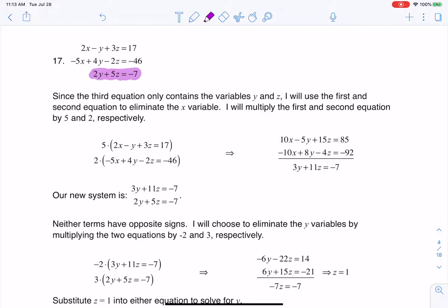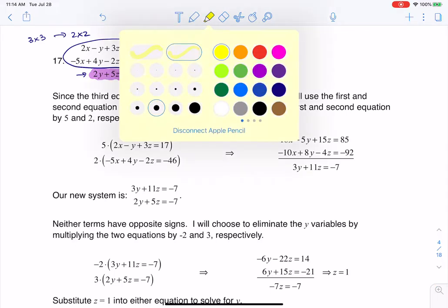In any 3x3, you start with your 3x3 and want to simplify it to a 2x2. I already have one equation with two variables, so I'm going to look at these two equations and eliminate the x variable. When I eliminate x from those two equations, that will simplify my system down to a 2x2.